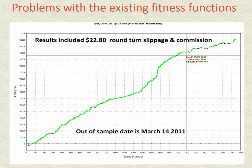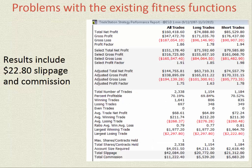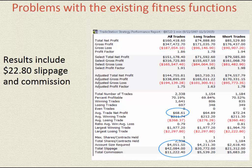Today we're going to look at a fairly old S&P 500 system. The system is ideal in the fact that it's three and a half years out of sample. It has a high volume of trades and it's moderately complex. Here is the performance report. Pay close attention to the $68.61 average trade figure. In this video, we're going to talk often about the average trade figure and its inverse relationship with the number of trades.